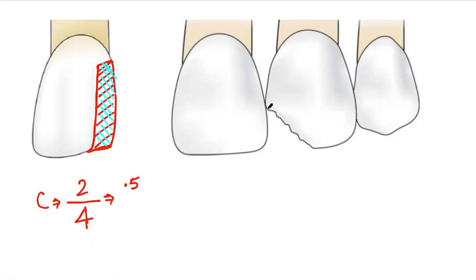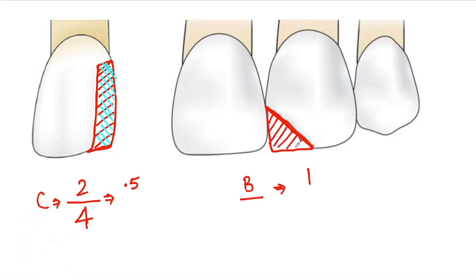What is the C factor if the class 4 lesion is triangular shaped? Let's calculate. Looking at the bonded surfaces, only one surface will be bonded to the composite restoration — so we have only one bonded surface. For the unbonded surfaces: the part forming the incisal edge, the mesial wall, the facial wall, and the palatal wall of the restoration will be unbonded — giving four unbonded surfaces. This makes the C factor for a triangular-shaped class 4 cavity equal to 0.25.